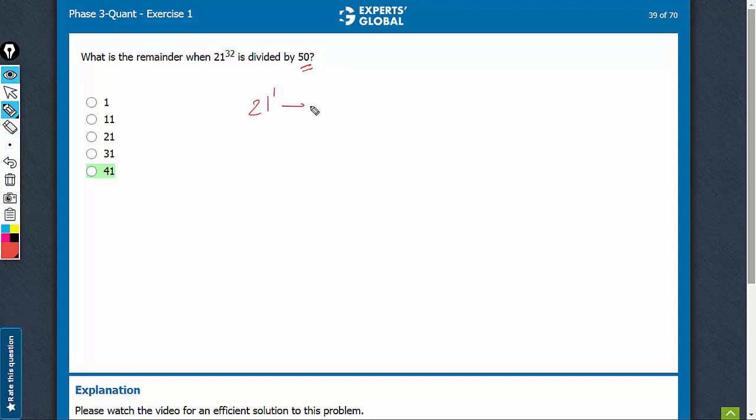See 21 raised to power 1. The last two digits, 21. 21 square 4, 41. The last two digits are 41.